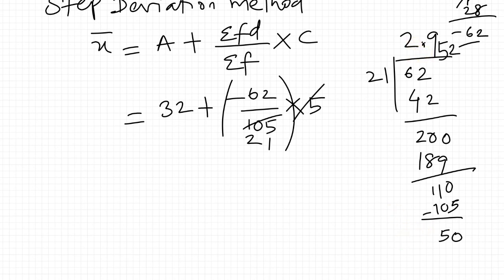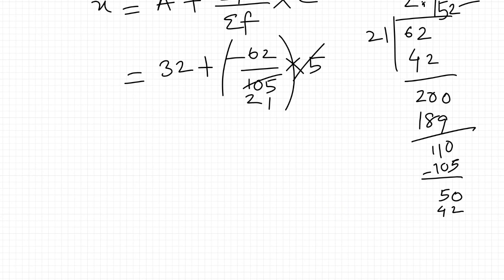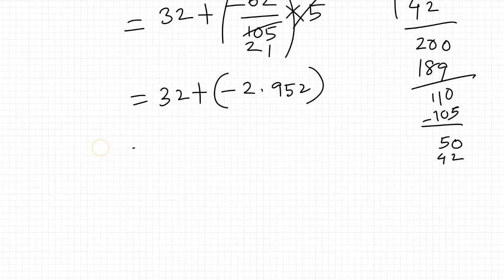50 divided by 21 is 2 times. 2 times 21 is 42. This gives us 2.952. Since it's a minus value, minus 2.952.